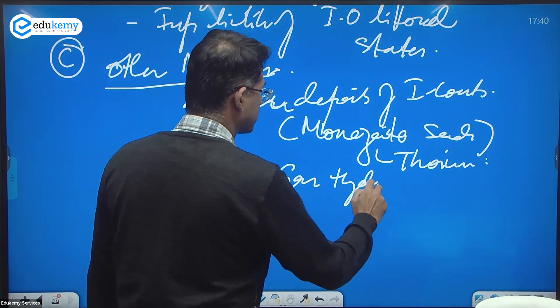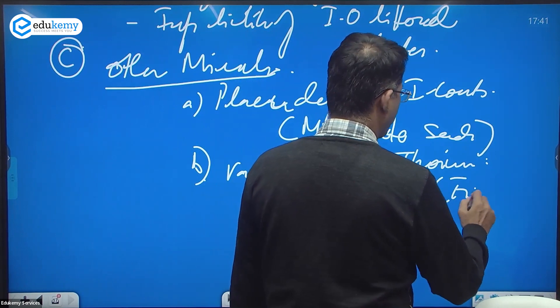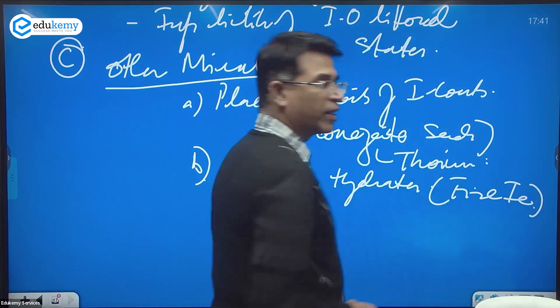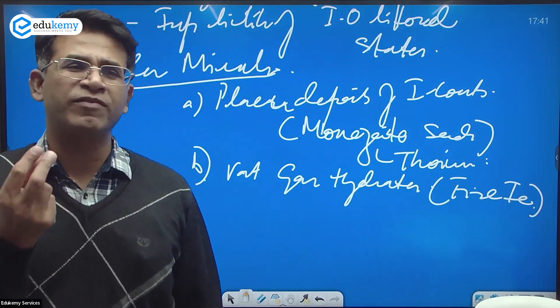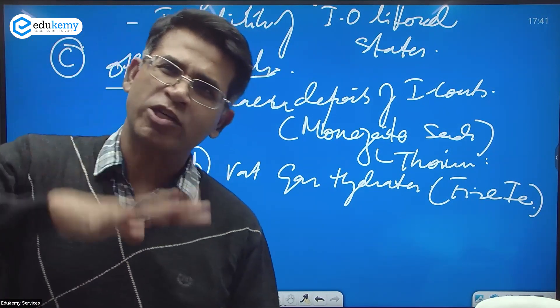Monazite sands of India's coast are the source of thorium. It's also a source of gas hydrates of the ocean floor. They are like crystals of gas on the ocean floor that look like ice.